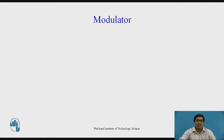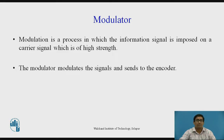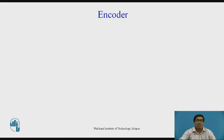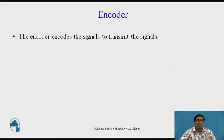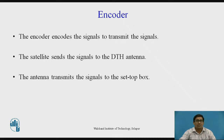Now we want to see the modulator. Modulation is a process in which the information signal is imposed on a carrier signal of high strength. Very high strength signals are required for transmission of this information. The modulator modulates the signal and sends it to the encoder. The encoder encodes the signals to transmit them. The satellite sends the signals to the DTH antenna, and the antenna transmits the signals to the set-top box, which delivers them to the TV channels through modulation and demodulation techniques.